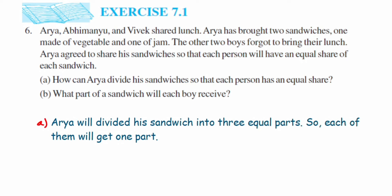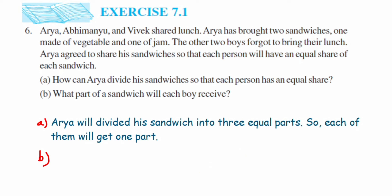The second question is: what part of a sandwich will each boy receive? This is asking for the fraction. Out of three parts, how many parts does each person get? Obviously each will get one part. So Arya will get one-third, Abhimanyu will get one-third, and Vivek will also get one-third. The required fraction is one upon three, because out of three parts each person gets one part.